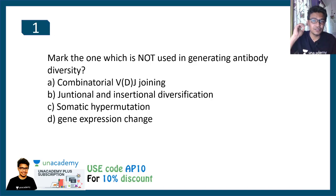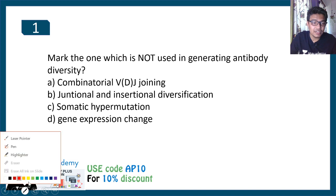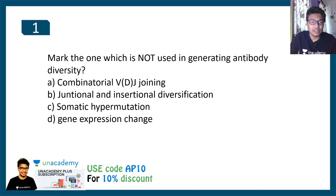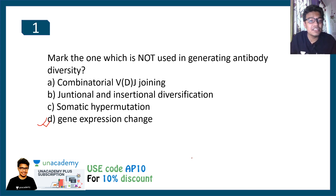The first question asks: which of the following is NOT used in generating antibody diversity? Options are: A) Combinatorial VDJ joining, B) Junctional flexibility and insertional diversification, C) Somatic hypermutation, D) Gene expression changes. The correct answer is option D, because gene expression changes can tell you how much of an antibody would be produced, but cannot diversify the antibody or change its affinity towards a particular antigen.